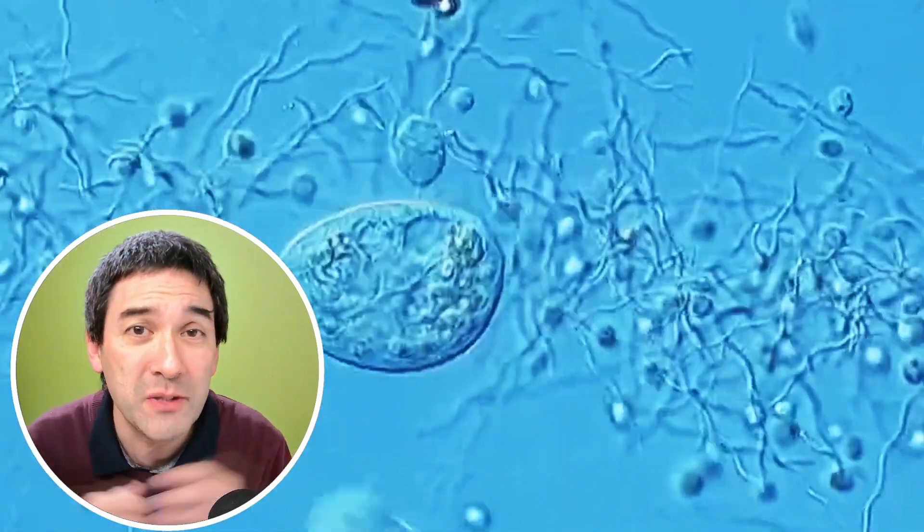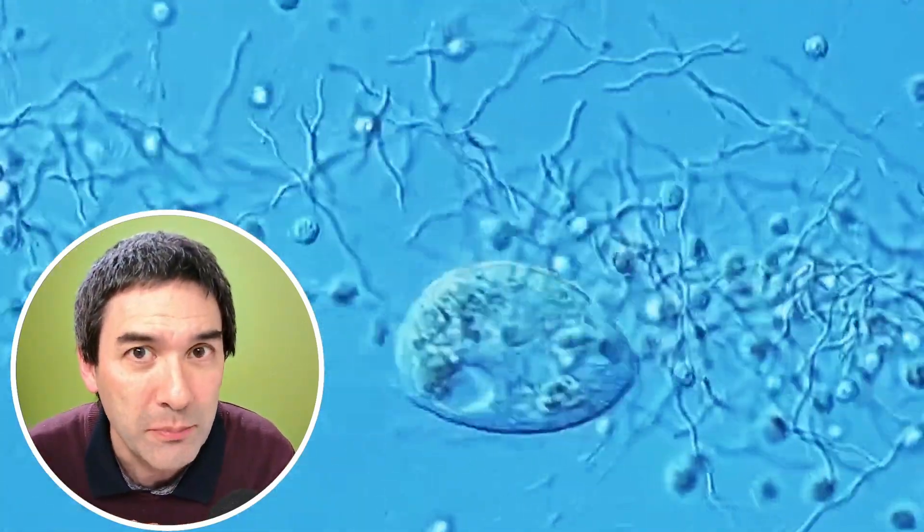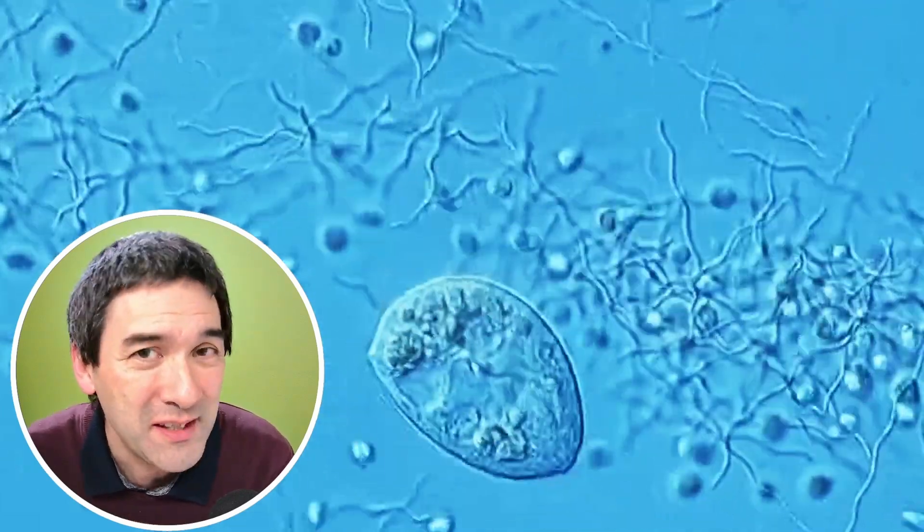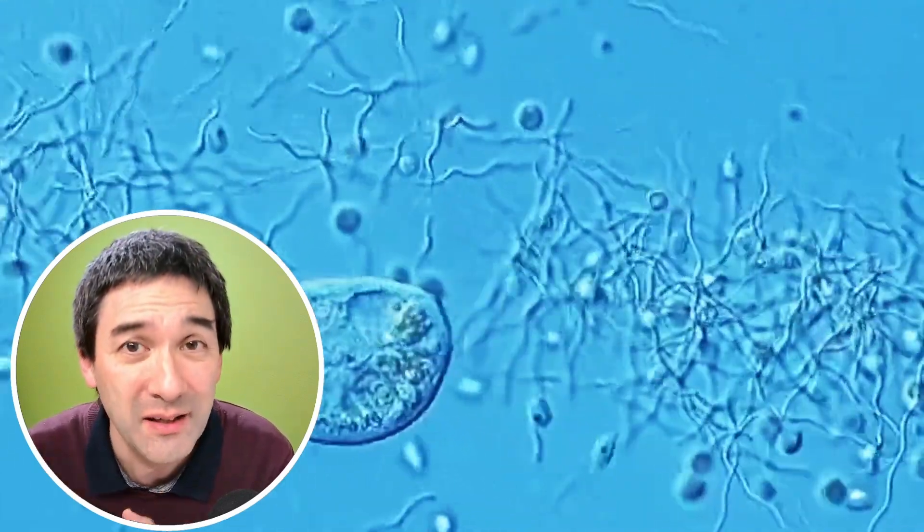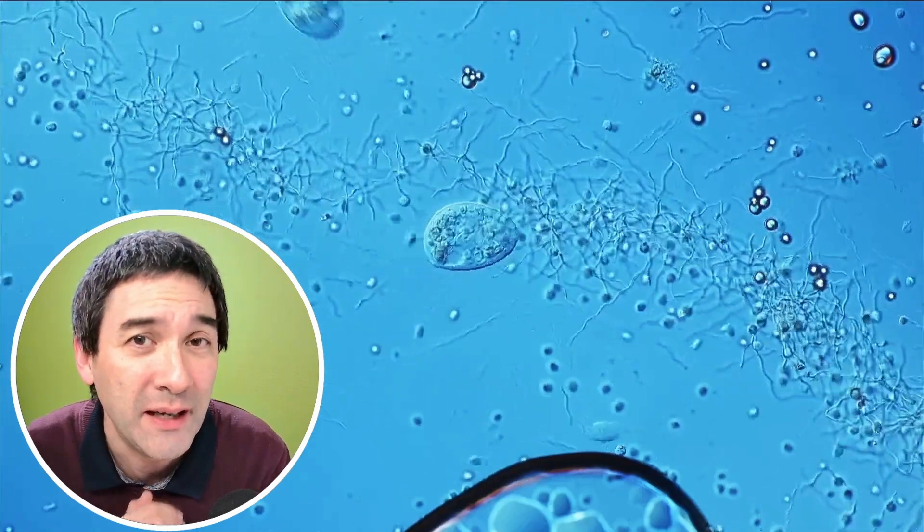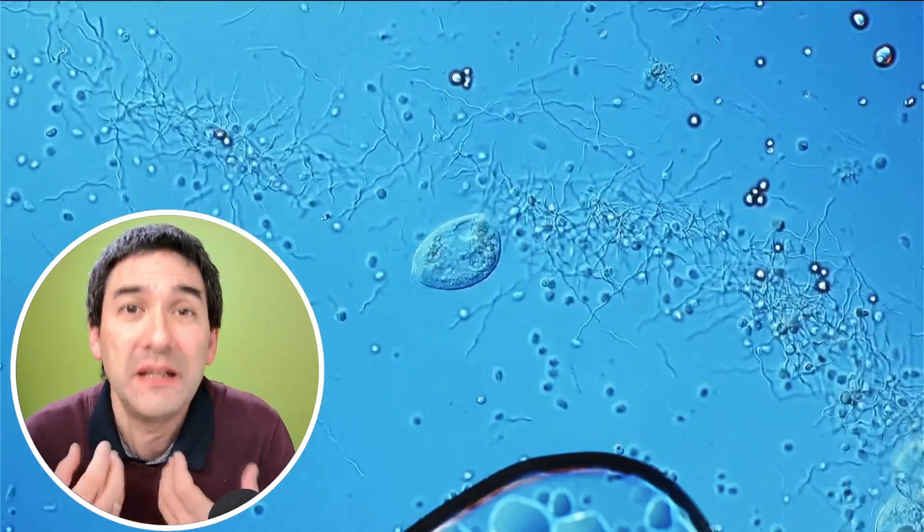you can see that those spiral-shaped spirochetes—spiral-shaped spirochetes, what a tongue twister—that they are almost the same length as those ciliates that you see here. So I have my doubts whether they're actually able to engulf them and eat them up.